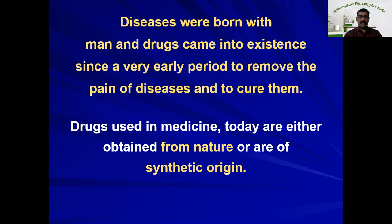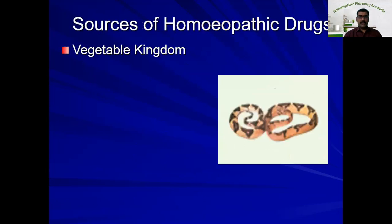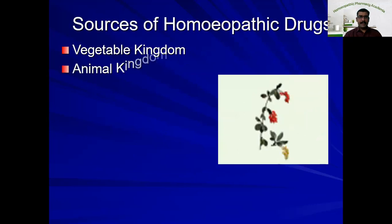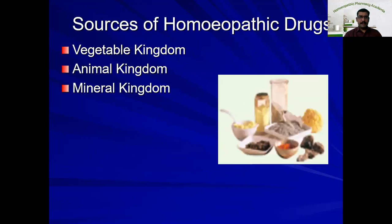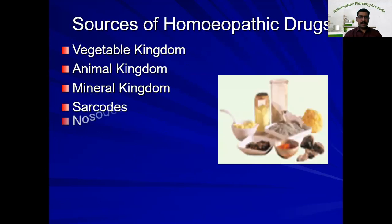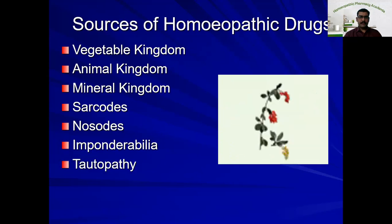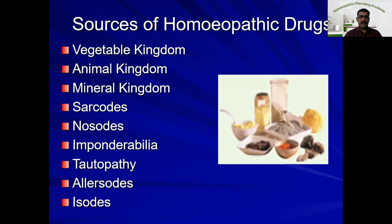Now let us see what are the sources of homeopathic drugs. The sources of homeopathic drugs are from the vegetable kingdom, animal kingdom, mineral kingdom, sarcodes, nosodes, imponderablia, tautopathic sources, allersodes, and isodes. These are the various sources from which the homeopathic drugs are prepared.